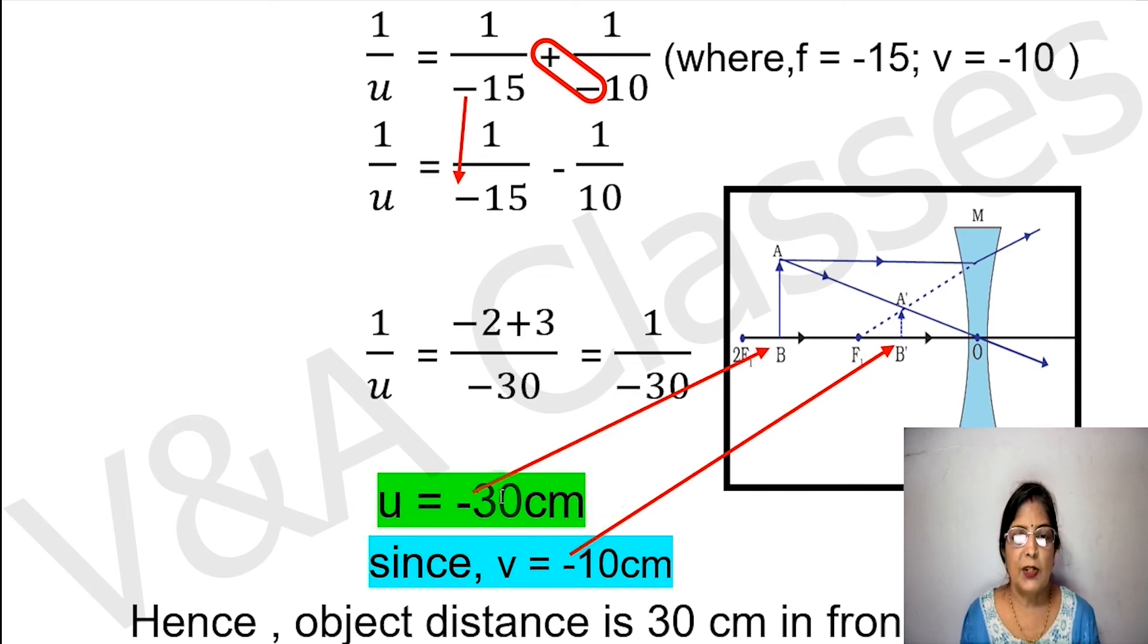The value of object distance has a minus sign, which means the object is on the left side of the lens.